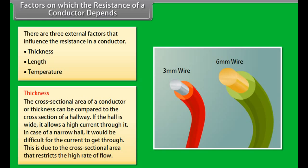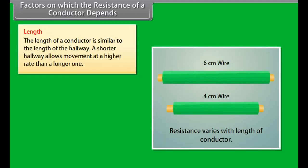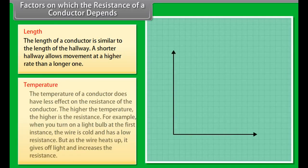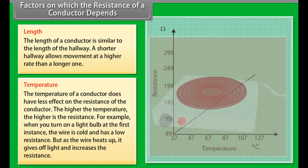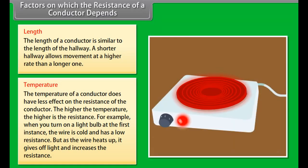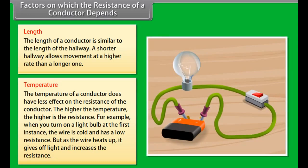Factors on which the resistance of a conductor depends: There are three external factors — thickness, length, and temperature. There is also a fourth factor, the conductivity of the material, which is considered an internal factor. Thickness: the cross-sectional area of a conductor can be compared to a hallway. A wide hall allows high current through it, whereas a narrow hall makes it difficult for current to pass, due to the cross-sectional area restricting flow.